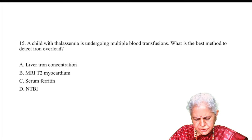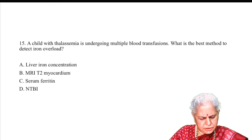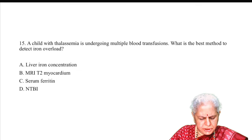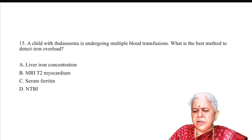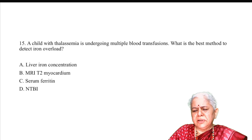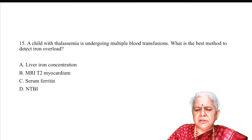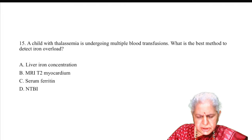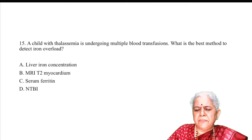A child with thalassemia is undergoing multiple blood transfusions. The best method to detect iron overload is A — liver iron concentration. Taking a liver biopsy and measuring ferritin content is the gold standard for quantifying iron overload in these children. Other options (MRI of the myocardium, serum ferritin, NTBI) exist in the management algorithm but liver iron concentration is the most accurate.